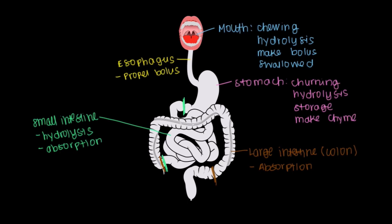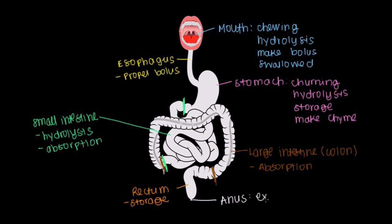After that, we pass food on to this structure here, which is called the rectum. Kind of like the stomach of the GI tract, the rectum serves for storage. We hold on to our processed food, and it's held there until we deem it an appropriate time to expel it. When it's time, it'll come out through the anus through expulsion.